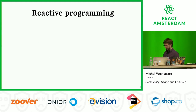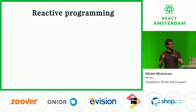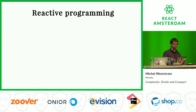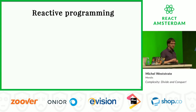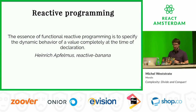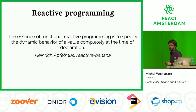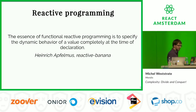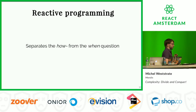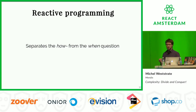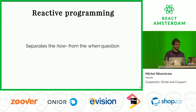One of the ways we can apply this is by using reactive programming. I'm aware that reactive programming is a quite scary concept for a lot of people, so I tried to find the least scary definition. The essence of functional reactive programming is to specify the dynamic behavior of a value completely at the time of declaration. In other words, it separates the question of how a value should behave from the question of when that behavior should be applied. You define the behavior, and then whatever reactive library you're using will make sure that behavior is consistent at any time in the future.